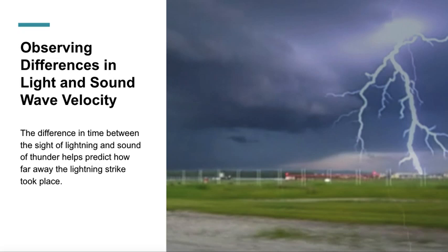The difference in time between the sight of lightning and sound of thunder helps predict how far away the lightning strike took place. Count the number of seconds between seeing lightning and hearing thunder. Divide by five. This calculation will tell you how many miles away the lightning strike took place.